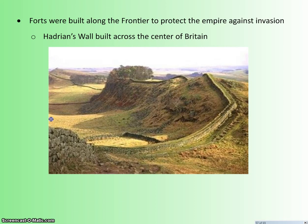Forts are built along the frontier to protect the empire against invasion. Probably the most famous is Hadrian's Wall — a wall built across the center of Great Britain from the North Sea on one side to the Irish Sea on the other. It is still there; you can still see it. The Romans realized they were never going to conquer the Celts and Scots of northern Britain — the terrain was too wild and the climate too terrible — so they built this wall to keep those people out. Ireland and Scotland are never conquered.